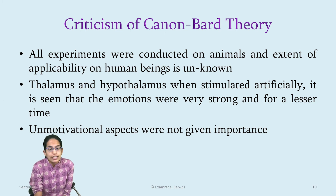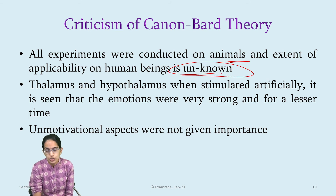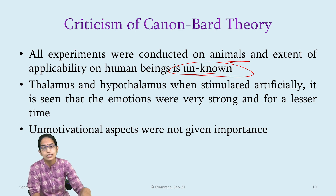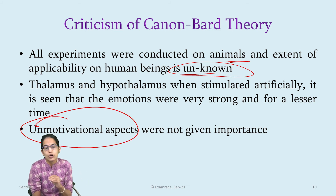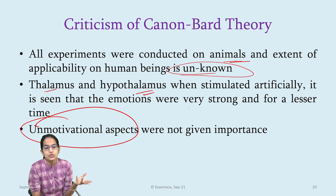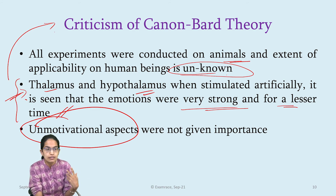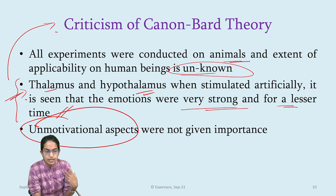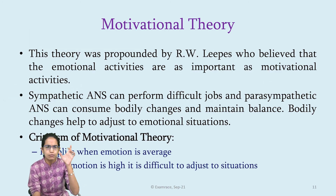Criticisms: All experiments were conducted on animals, and their capability in explaining human beings is unknown — we are not very sure that experiments successfully done on animals would be successfully explained in humans as well. There are certain motivational aspects which are not given importance here. Additionally, there have been cases where the thalamus and hypothalamus were stimulated artificially, but the emotions produced were very strong and lasted for a very short time — this is also a criticism of the Cannon-Bard theory.